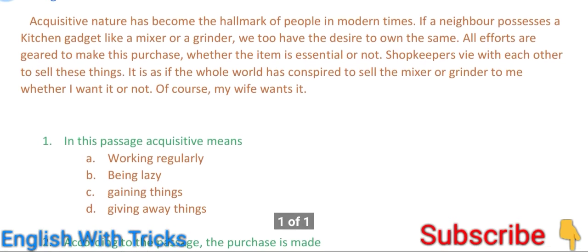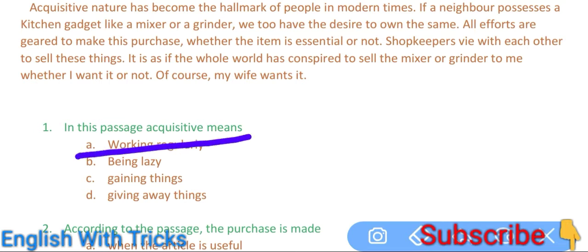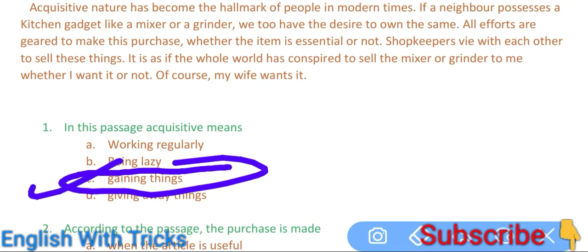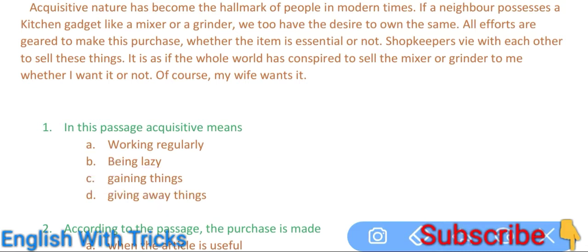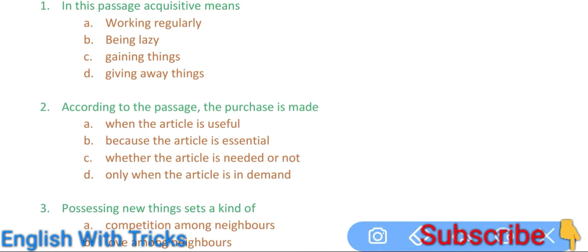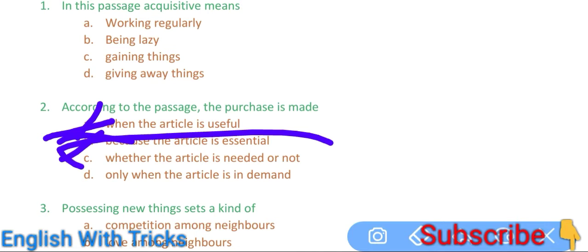So let's see the question answers. According to the passage, the purchase is made — is it when the article is useful, or because the article is essential, or whether the article is needed or not? The answer is option C: whether the article is needed or not, we still have to purchase it. So option C is correct.